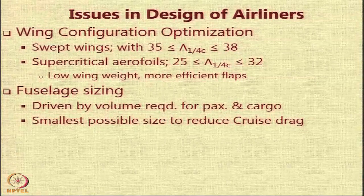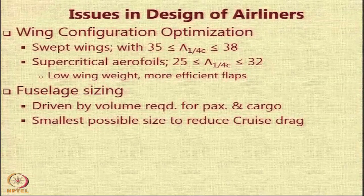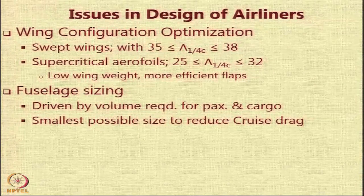The sizing of the fuselage is not a very difficult task. The fuselage is basically going to be almost like a cylindrical body with a nose and a tail. The nose accommodates the cockpit and instrumentation, while the tail accommodates things like the APU, some baggage, and adequate conical taper to allow the tail surfaces sufficient moment arm. Fuselage design is driven by the volume required for passengers and cargo, and we want to make it as small as possible to reduce cruise drag.